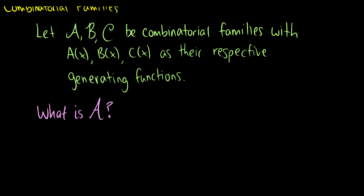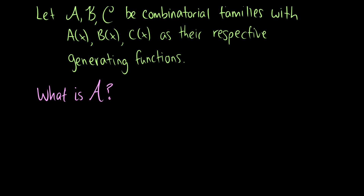A combinatorial family is just a sequence of coefficients, which we call A0, A1, A2, and these are just the number of ways to count objects with some length. So for the first slot, A0, this is when the object has a length of 0, and A1 would be a length of 1, so on and so forth.